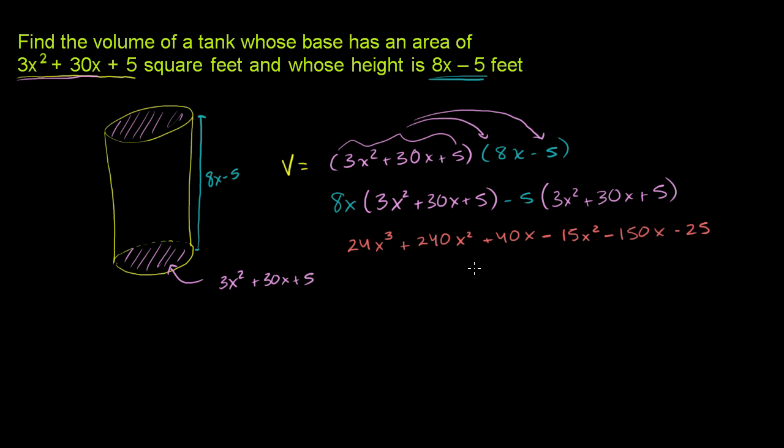And then we just have to simplify it from here. So we only have one third degree term, one thing that has an x to the third in it. We have this term right here. So we'll write that as 24x to the third. And then what are our x squared terms? We have 240x squared minus 15x squared. So what's 240 minus 15? It's 225x squared. So plus 225x squared.